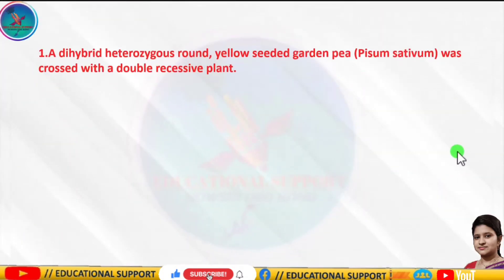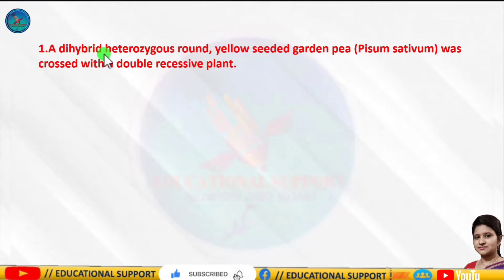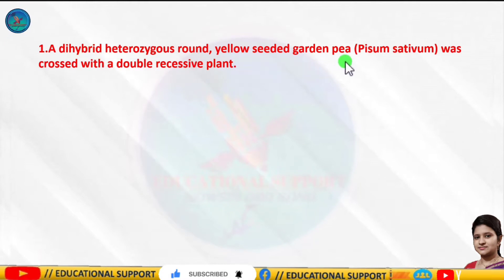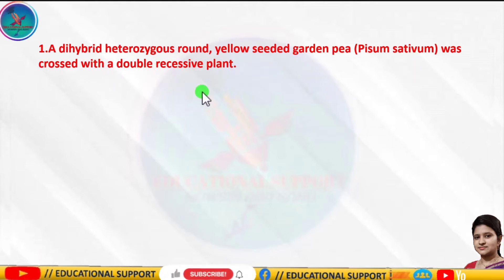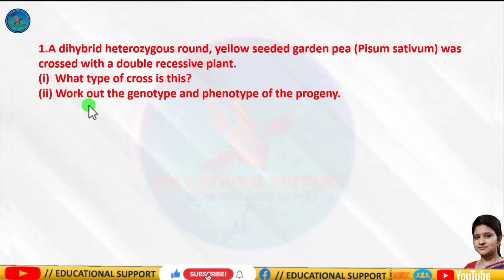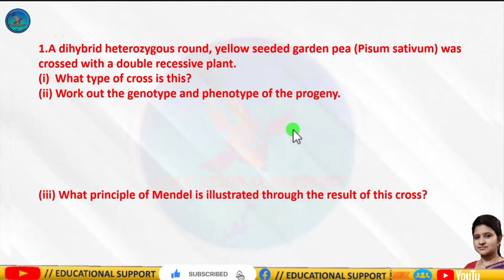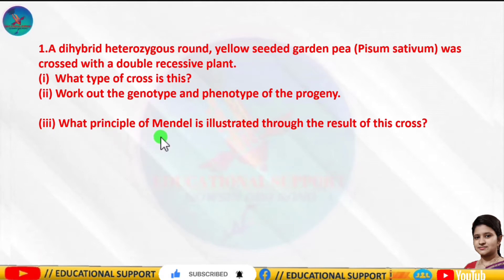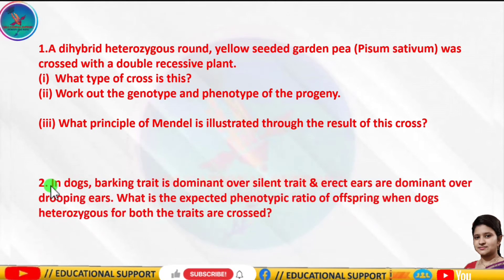Question number one: A hybrid heterozygous round yellow seeded green garden pea was crossed with a double recessive plant. What type of cross is this? Work out the genotype and the phenotype of the progeny, and what principle of Mendel is illustrated through the result of this cross?